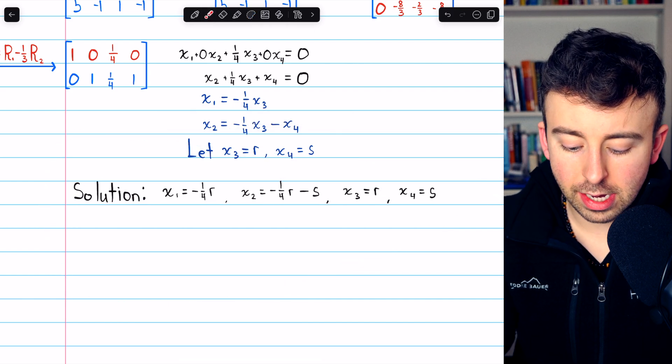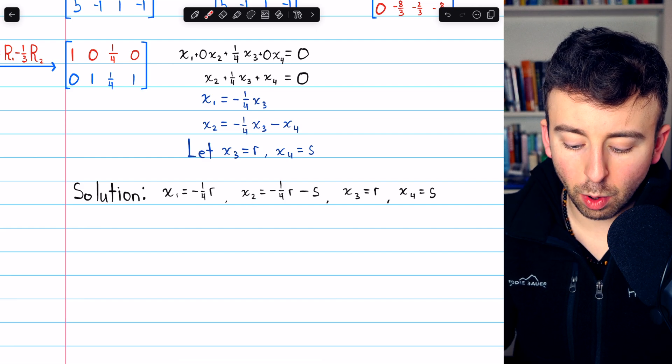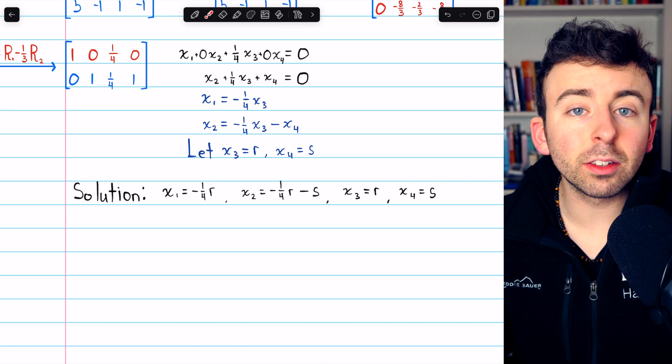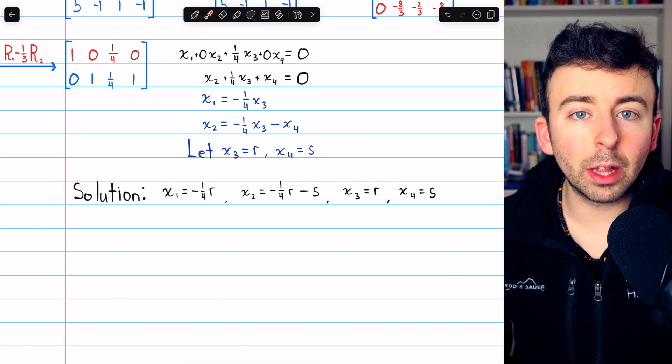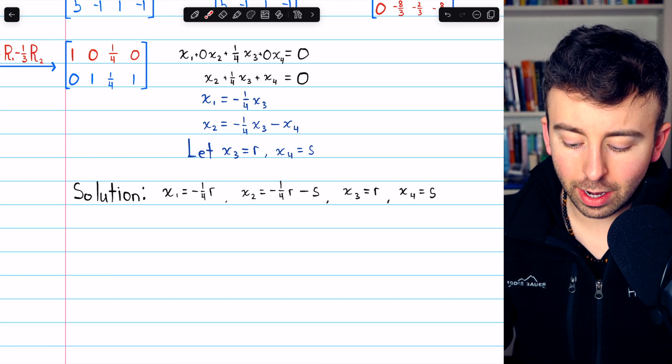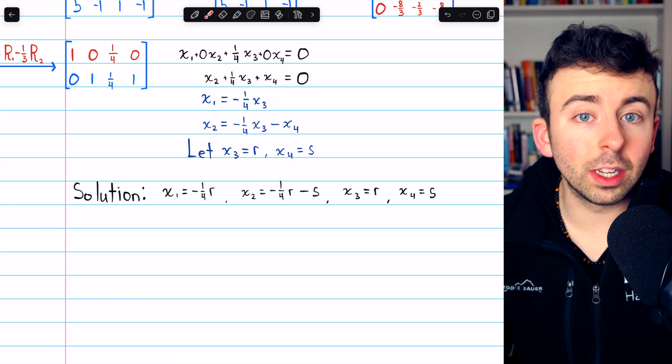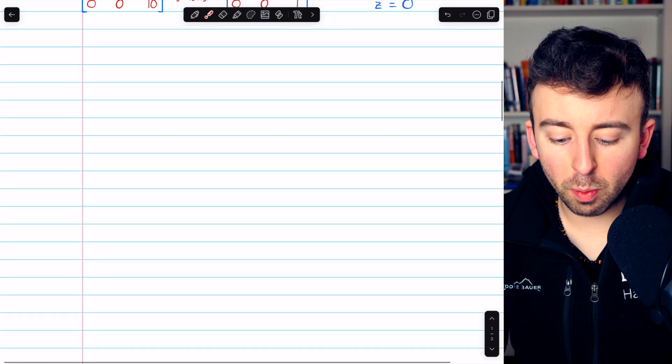x1 must equal negative one fourth r, x2 equals negative one fourth r minus s, x3 equals r, and x4 equals s. An infinite set of solutions. Pick any value you like for s and r. Those are our free variables, and you're going to get a solution to this linear system.